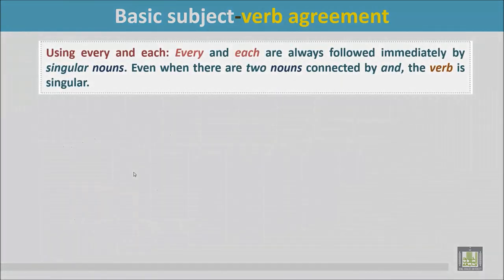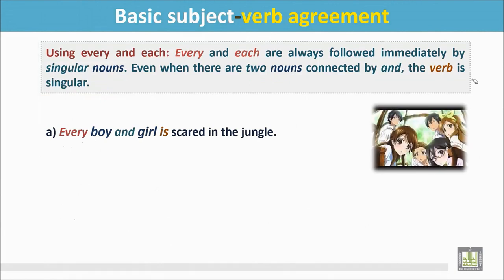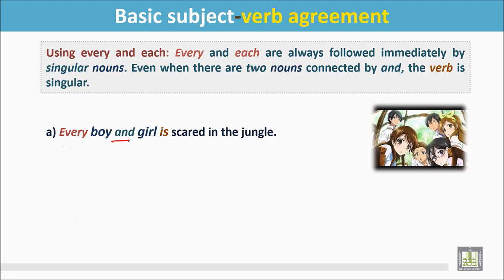Using 'every' and 'each.' Every and each are always followed immediately by singular nouns. Even when there are two nouns connected by 'and,' the verb is singular. Every boy and girl is scared in the jungle. In this sentence, 'every' is followed by the singular nouns boy and girl, connected by 'and,' so the verb should be singular.